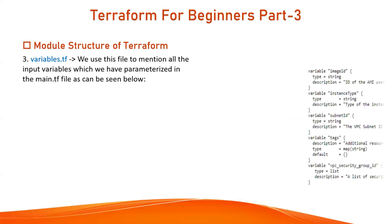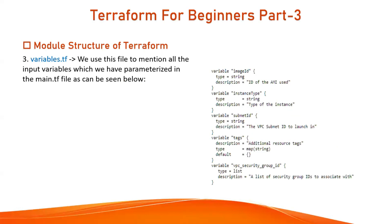Now let's look at variables.tf. You can define variables in your scripting and use them across any Terraform project. We use this file to declare all input variables, which can be parameterized in the main.tf file. This is how you define your variables.tf file — you have a variable called imageID, specifying its type (string, integer, boolean) and a description. We also have variables for instance type, subnet ID, tags, and VPC security group ID.